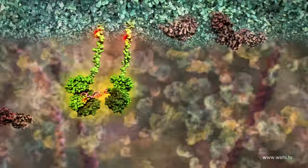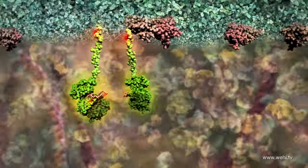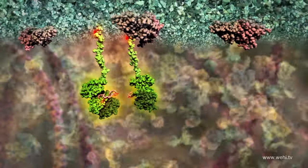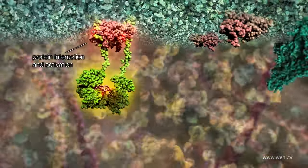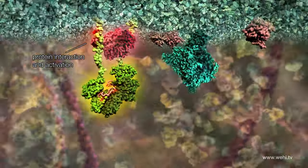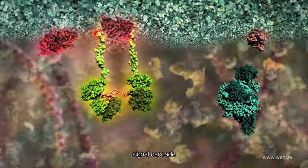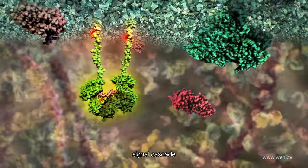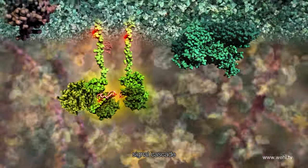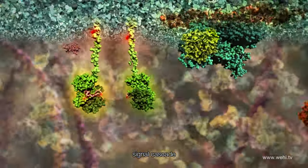Specialized proteins interact with the activated receptor just below the cell's surface. The receptor activates these proteins and they in turn are able to activate multiple other proteins in a long signal cascade. This complex signaling process eventually tells the cell to take up glucose for use as an energy source.